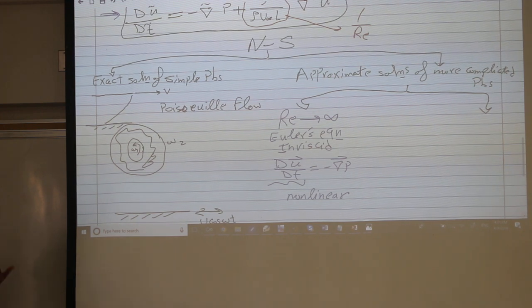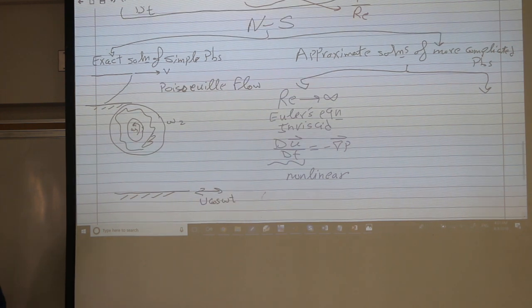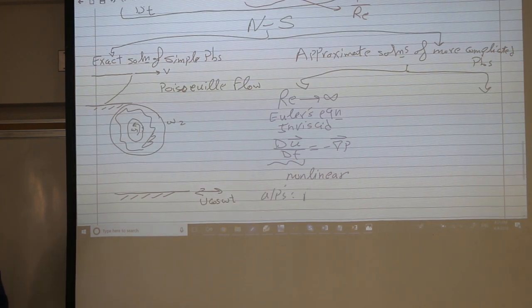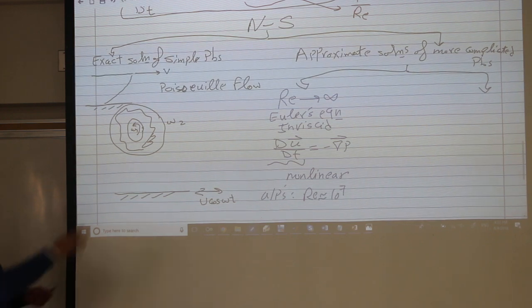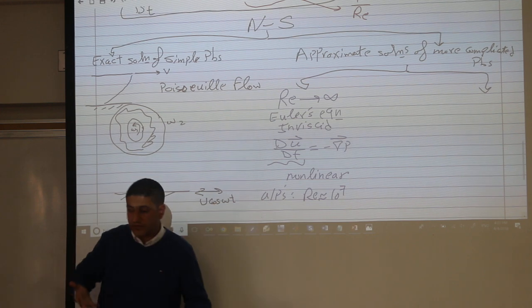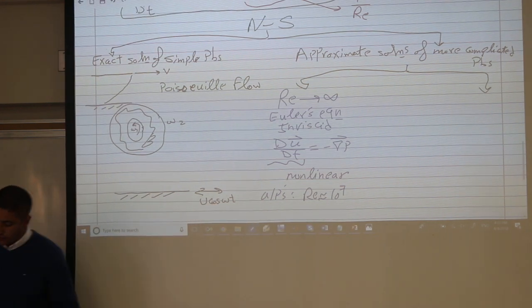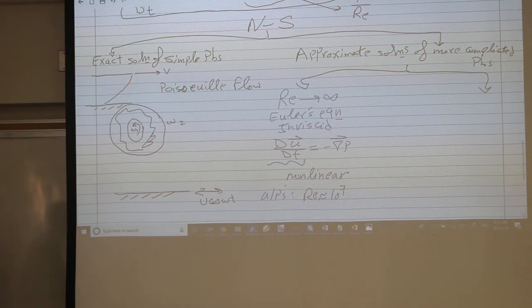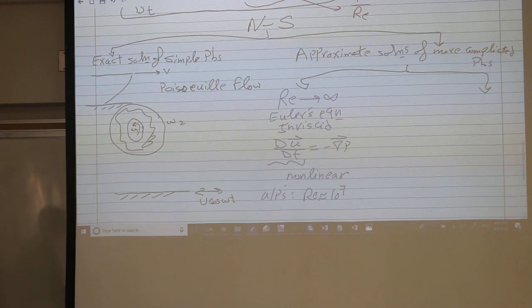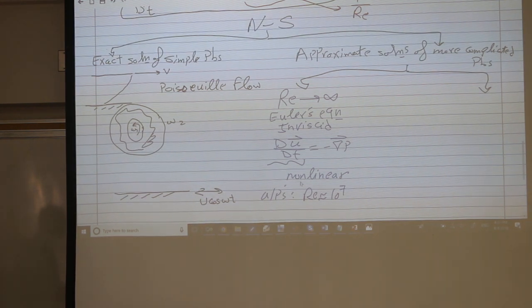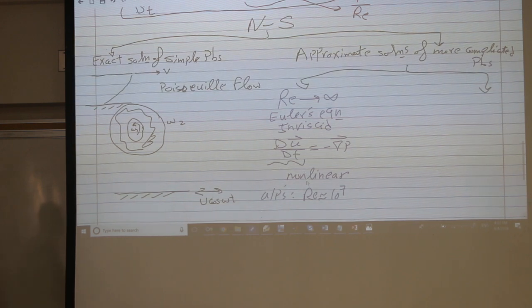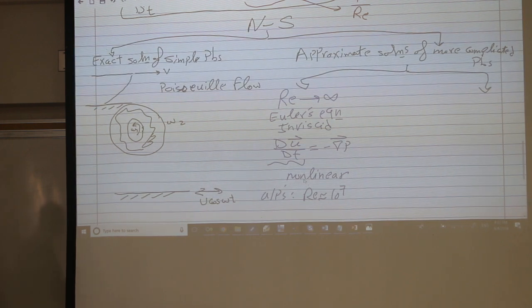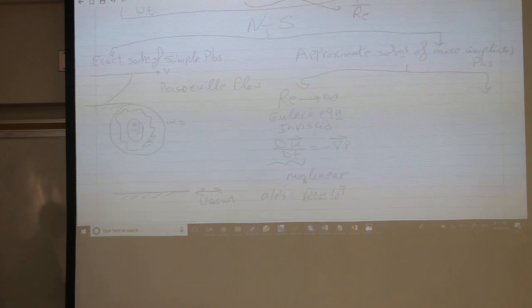But anyway, in our applications, for airplanes, typically the Reynolds number is in the order of 10 million. So this term might be very small. If it's very small and doesn't affect your computations, it's better to neglect it. It might not help much because you still have the non-linear. However, there exists a unique solution to the Euler's equation. So this problem has been solved.